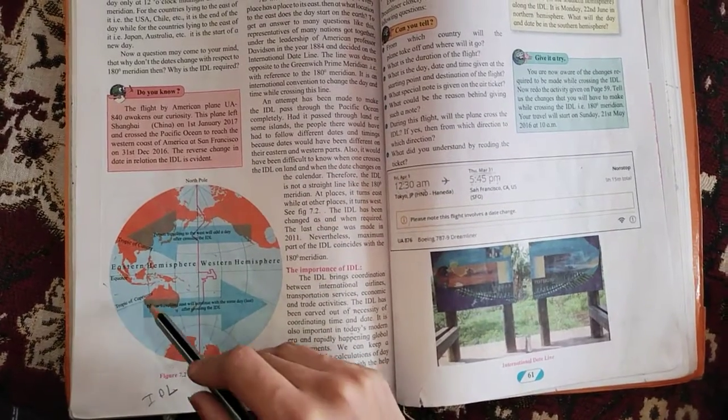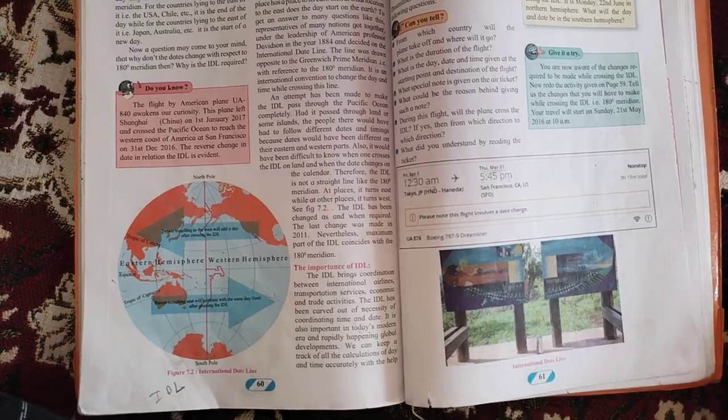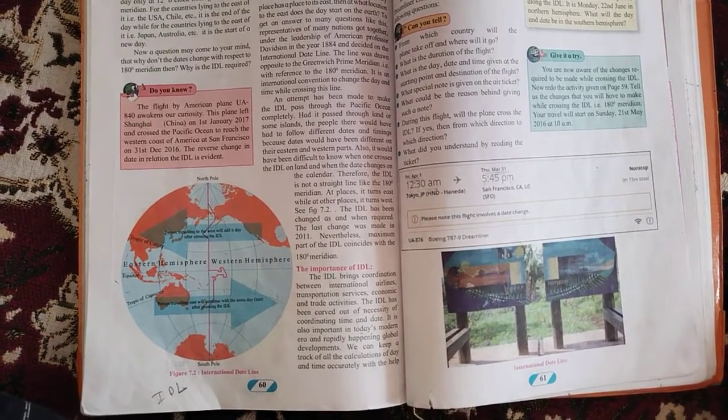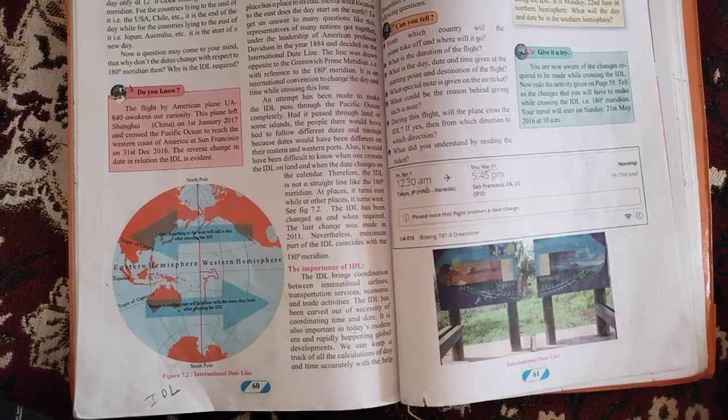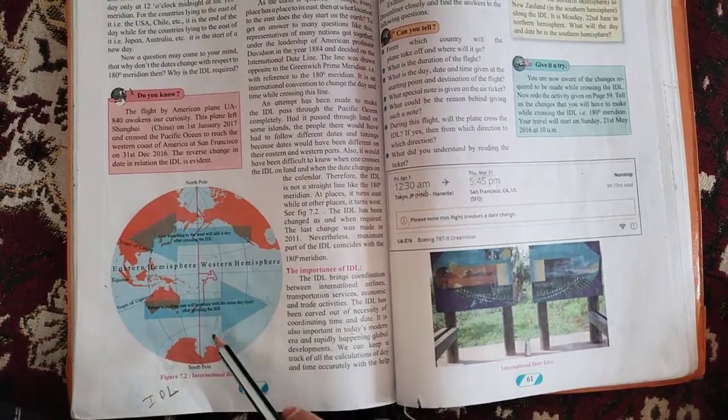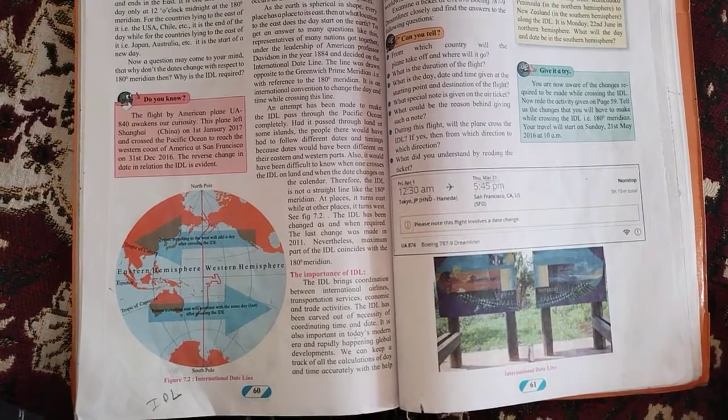If we want to understand in a simple line, it will be that from the ticket, the day and the date changes if the IDL is crossed during the journey. So, students, here we are going to stop in this video.